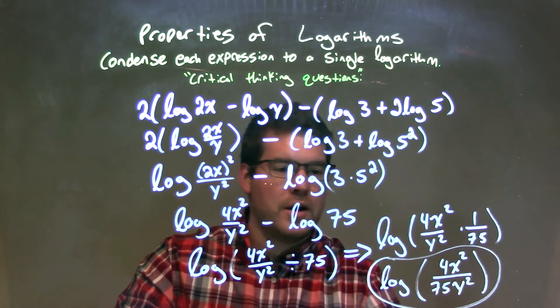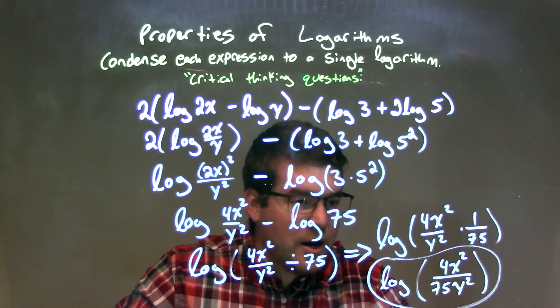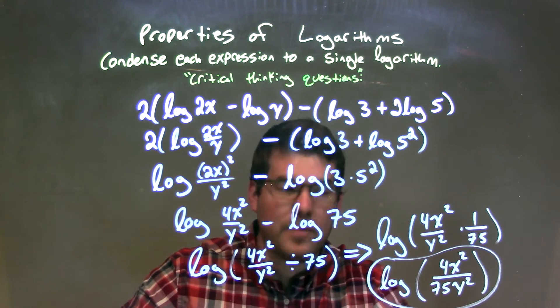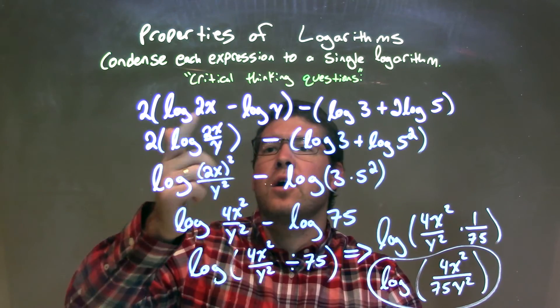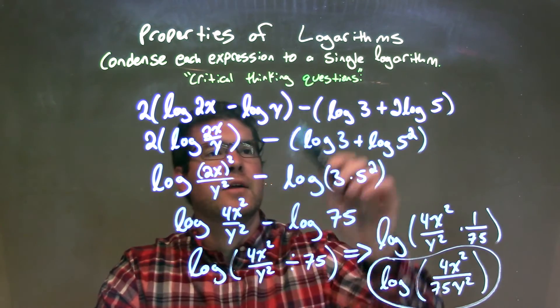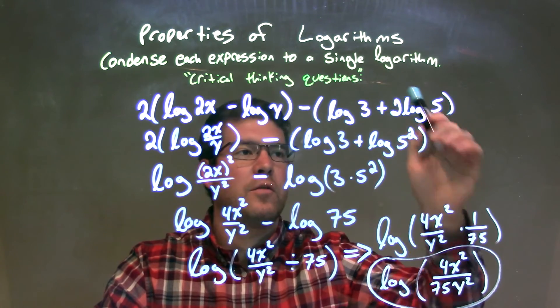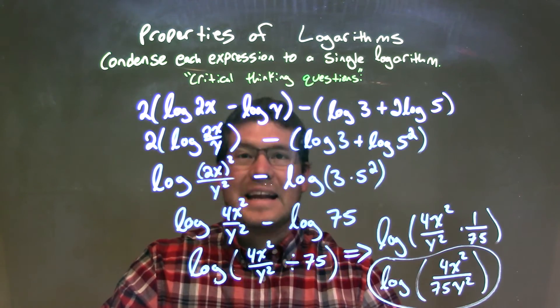After all that work, it's the log of parentheses 4x squared divided by 75y squared. So let's recap, we're given 2 times parentheses log of 2x minus log of y, close parentheses, minus log of 3 plus 2 log of 5, close parentheses. We need to condense that.